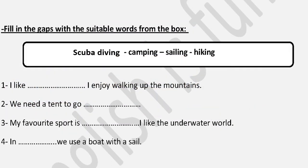Fill in the gaps with the suitable words from the box: Skiing, Camping, Sailing, and Hiking. Number one: 'I like ___. I enjoy walking up the mountains.' Walking up the mountains — so this is Hiking. Number two: 'We need a tent to go ___.' We need a tent to go Camping. Number three: 'My favorite sport is ___. I like the underwater world.' That's Scuba Diving, not sailing. Number four: 'In ___ we use a boat with a sail.' A boat with a sail — so it's Sailing.